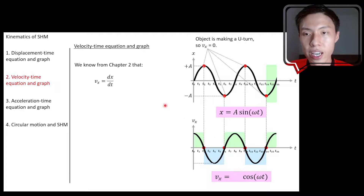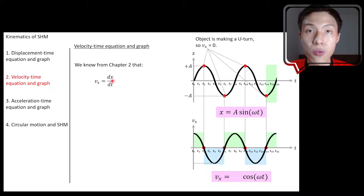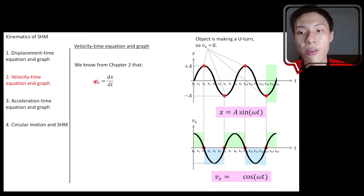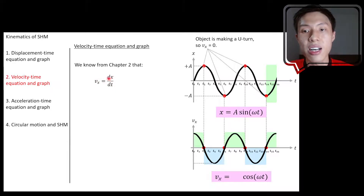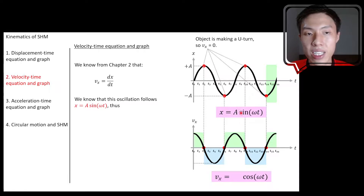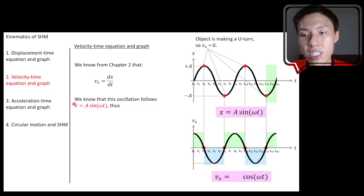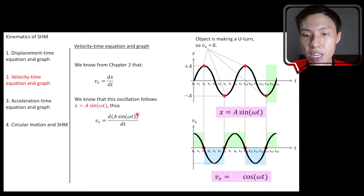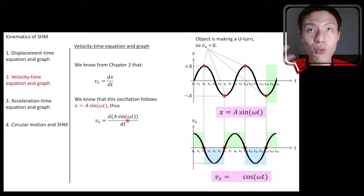From Chapter 2, we know that the x-component of velocity is obtained by vx = dx/dt — this is instantaneous velocity, how position changes with time. We also know that x = A sin(ωt) for this oscillation. So we substitute A sin(ωt) in place of x, and now we start to do our differentiation.